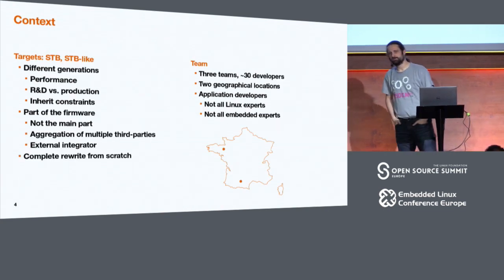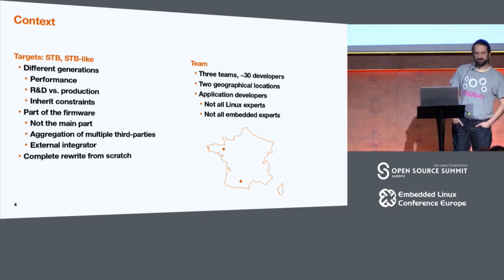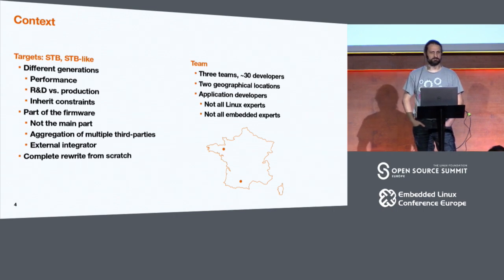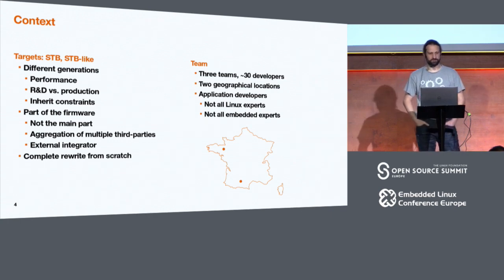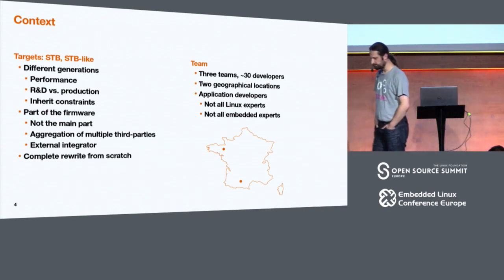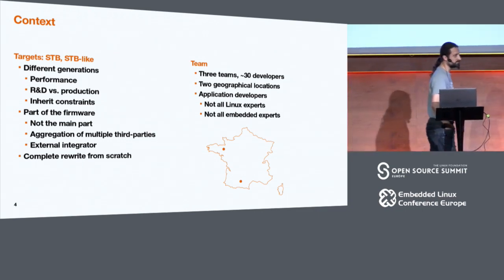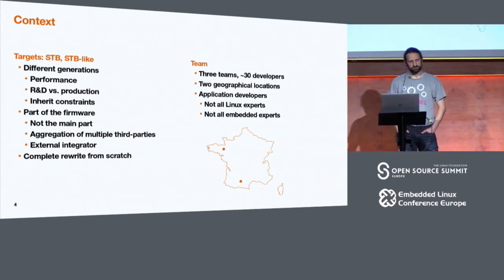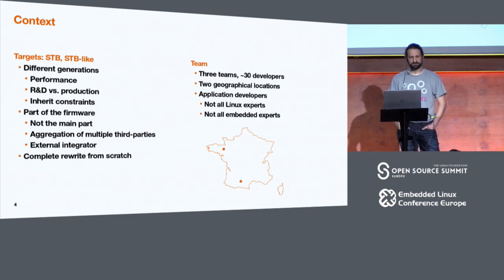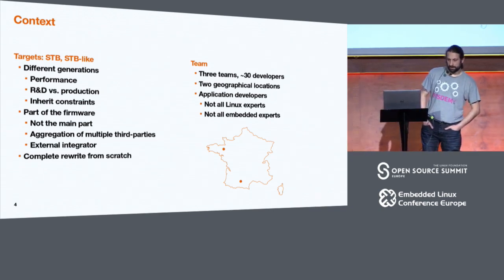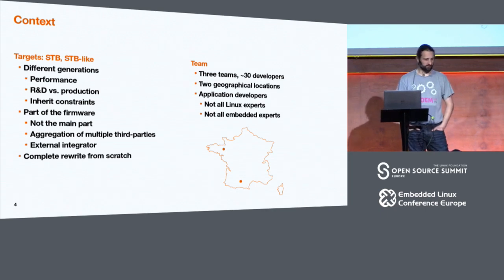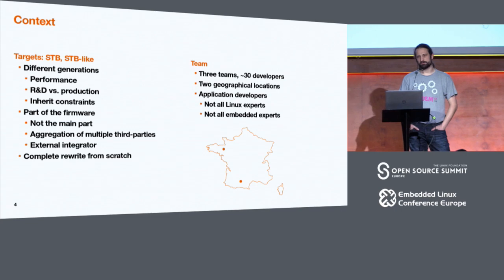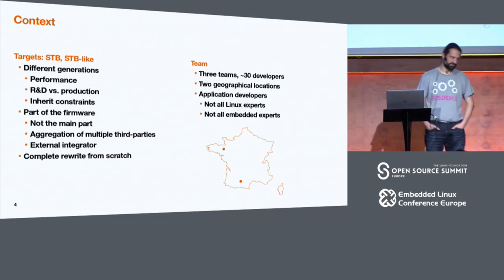The context of the project: the team I'm working on is essentially targeting set-top boxes, IPTV decoders, whether production devices or R&D devices. We have various generations of decoders with various performance points. One of the most critical issues is that we inherit constraints from legacy. One of those constraints is that we are only part of the firmware — the main part is provided by a third party. The part I'm talking about is a complete rewrite from scratch of an existing application, with three teams and about 30 developers over the past four years.